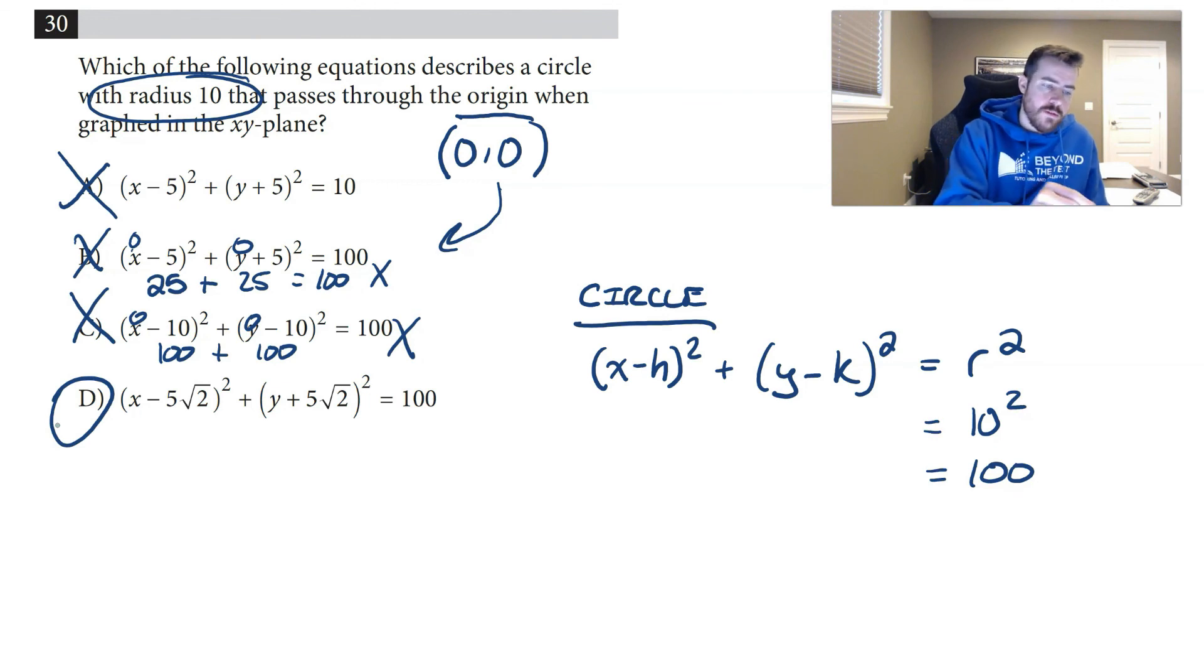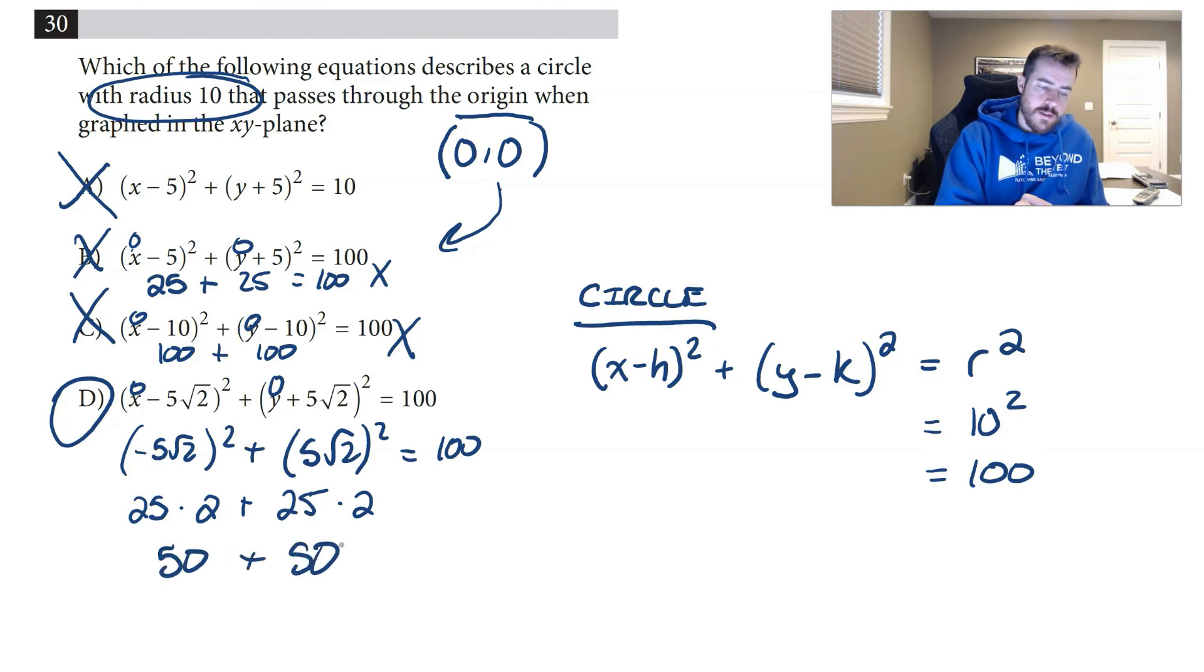Let's just prove this to you. If you put in 0 here, you get -5√2 squared plus 0 + 5√2 squared. Does that equal 100? Well, if I did this out: 5² would be 25, √2² would be 2, so 25 times 2 is 50. 50 plus 50 does equal 100. So you can get your answer pretty easily by just putting the point that they gave you into your equations.